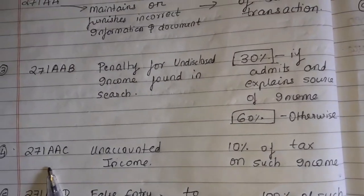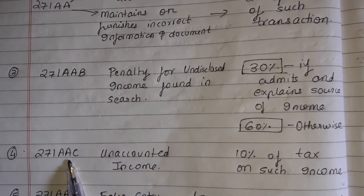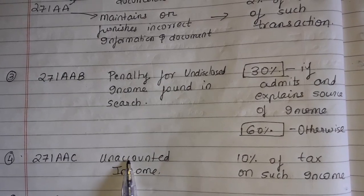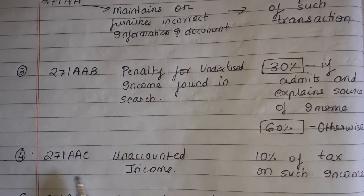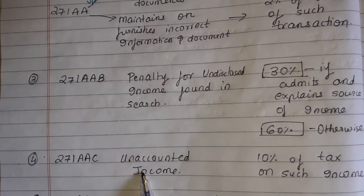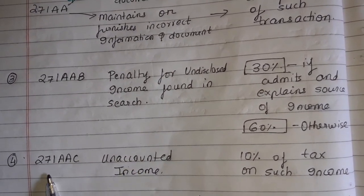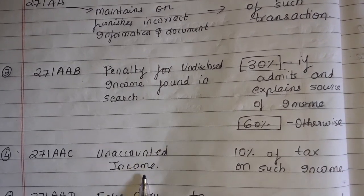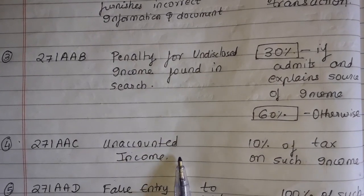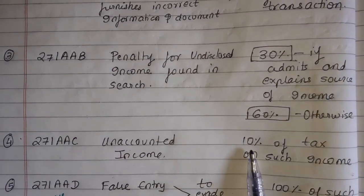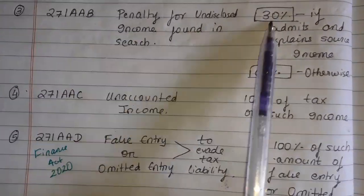Number 4: Section 271AAC — Unaccounted Income. If you have income that you don't record in books of account — income that should have been recorded but was ignored — then there is a penalty of 10% of tax on such income found in a search case. In search cases the penalties are higher.